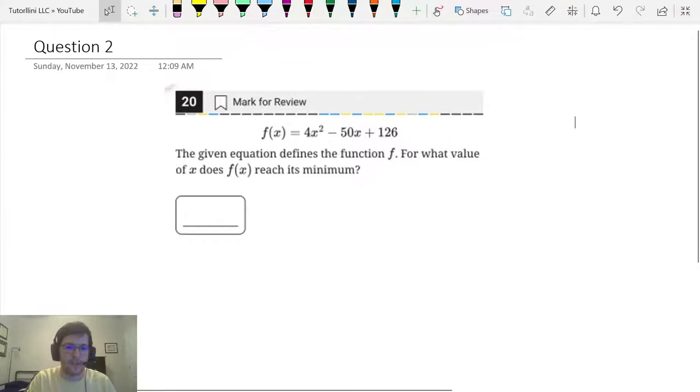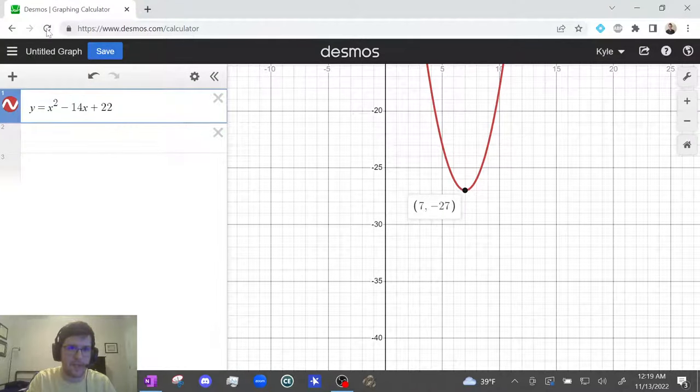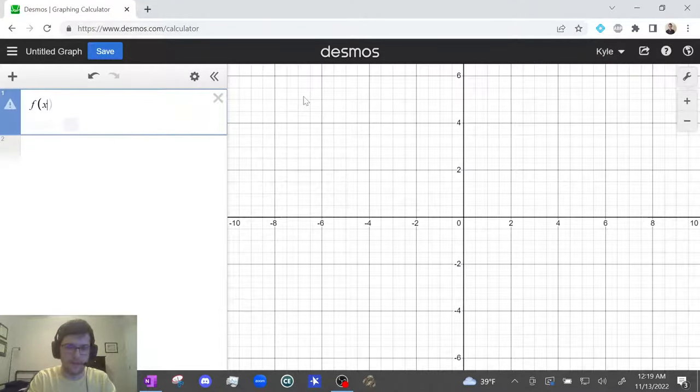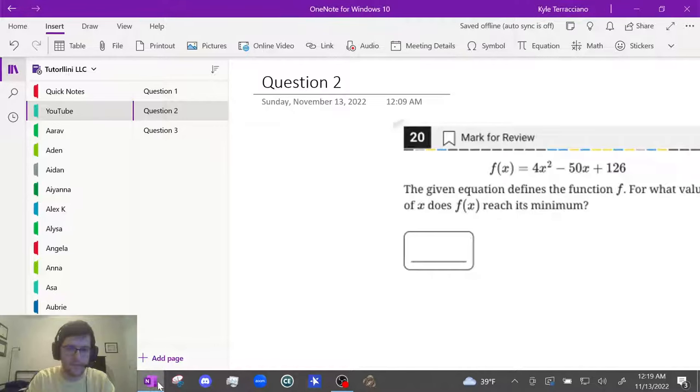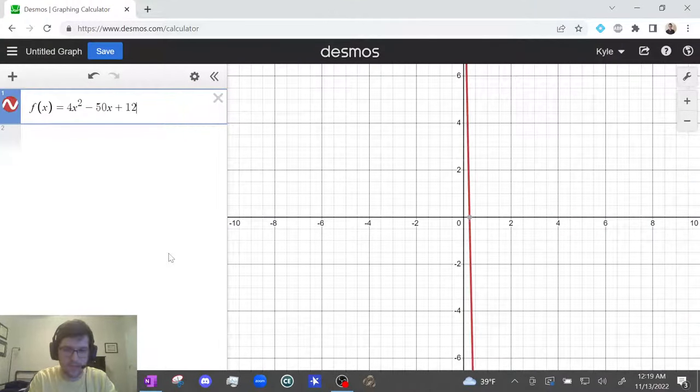So pause this video, see if you can solve it using Desmos. All right, so the function, again, we're just gonna type it in and click on the vertex. So 4x squared minus 50x, I'm gonna type it in exactly as it's written.